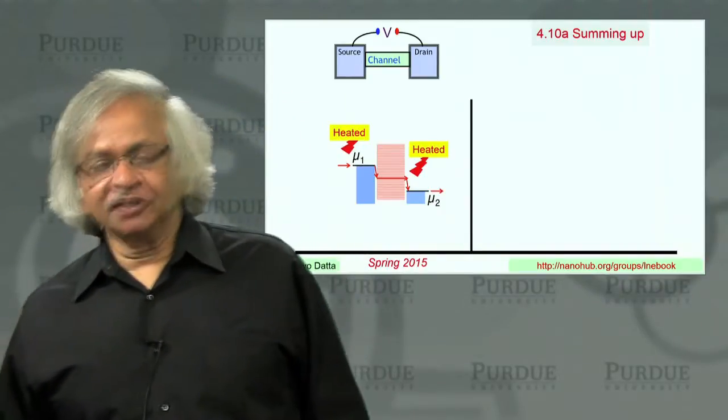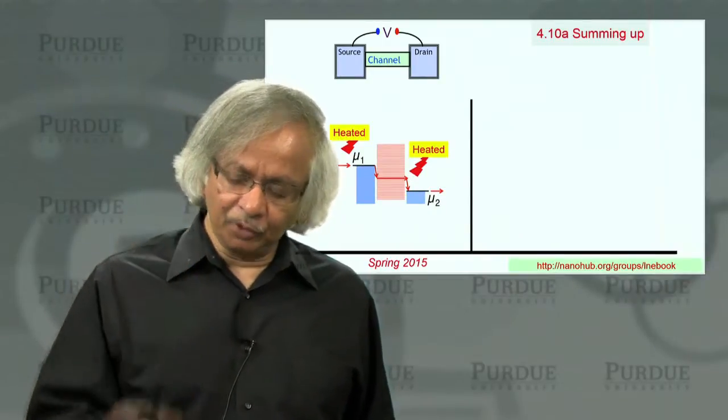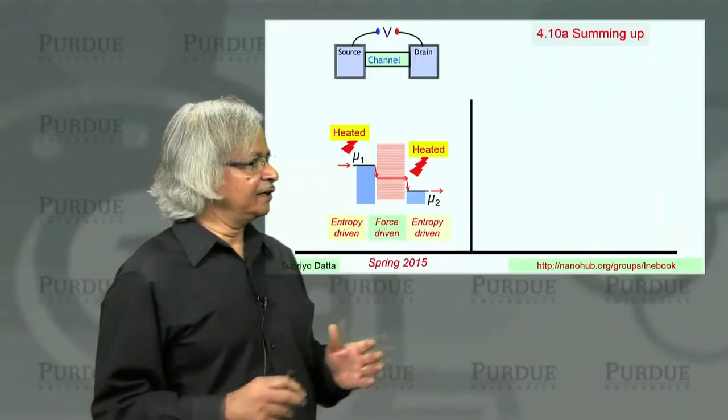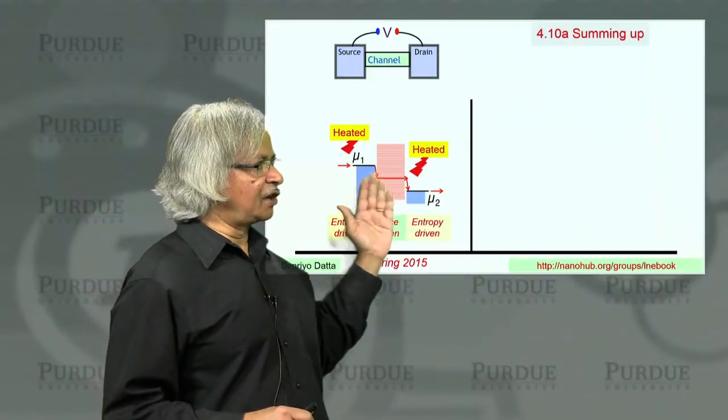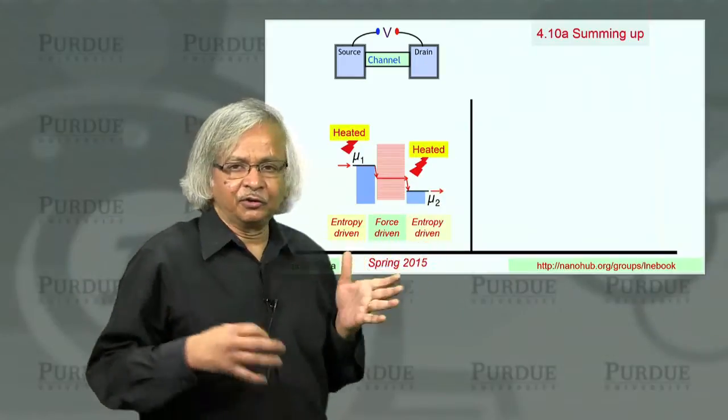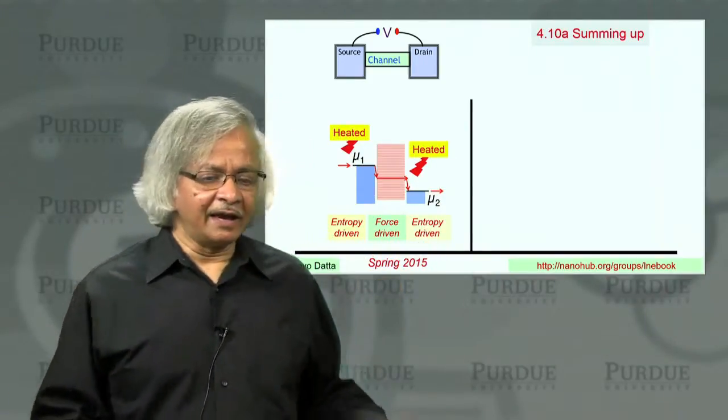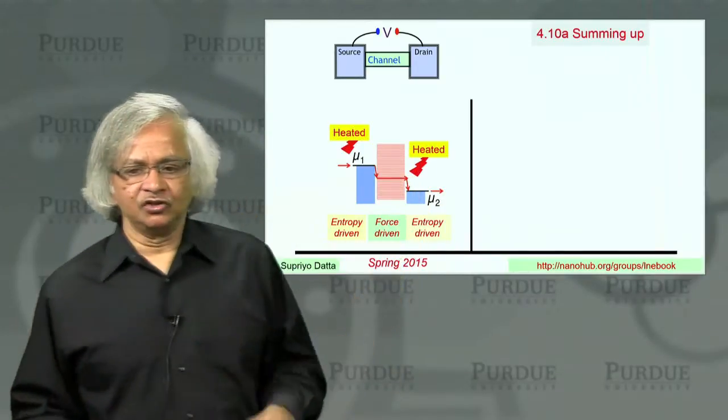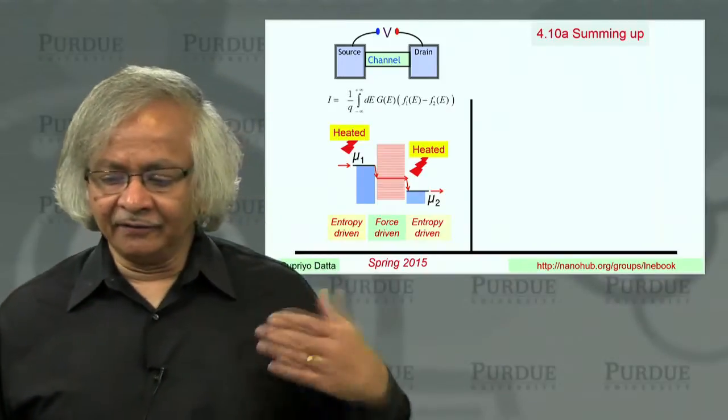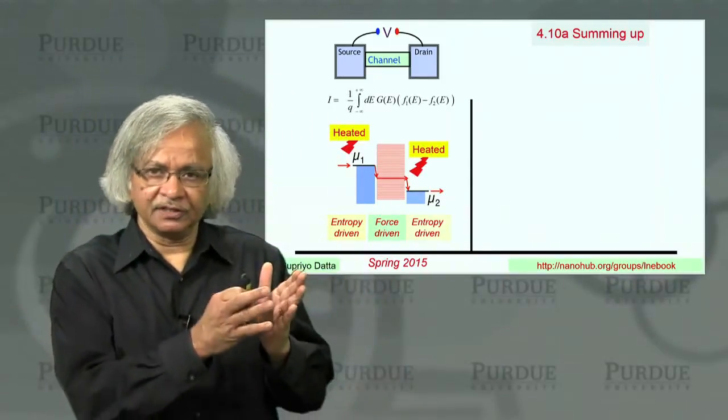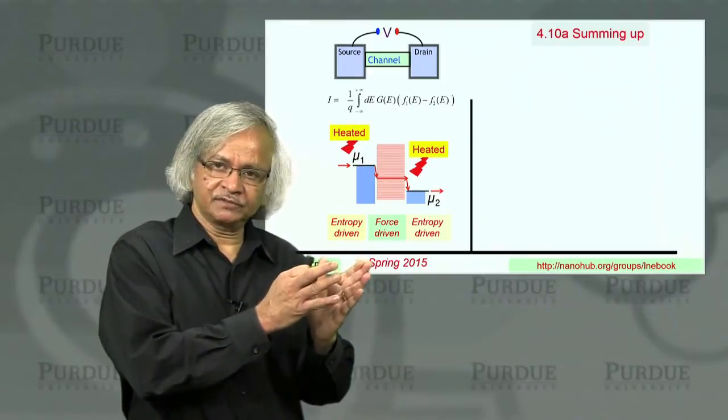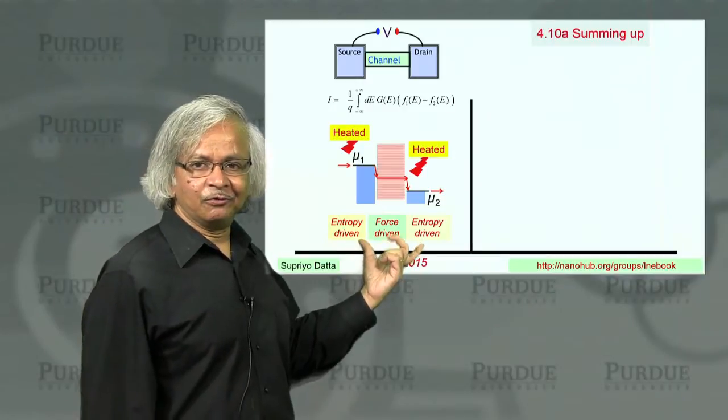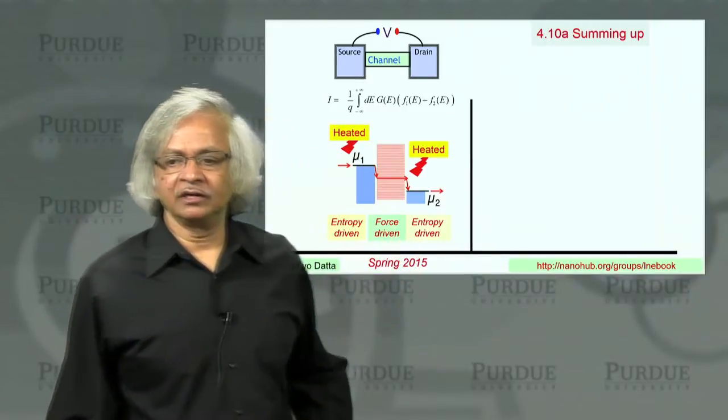Now as you know, in much of this course we have been using this new approach inspired by nanodevices, which is to say think of the device as having these contacts where all the entropy-driven processes are restricted and that a channel has no entropy-driven processes in it. And that allows you to describe current flow in a relatively simple way. That's what we had been doing for the first three units. And this unit is designed to give you some insight into what the entropy-driven processes mean and what it involves.